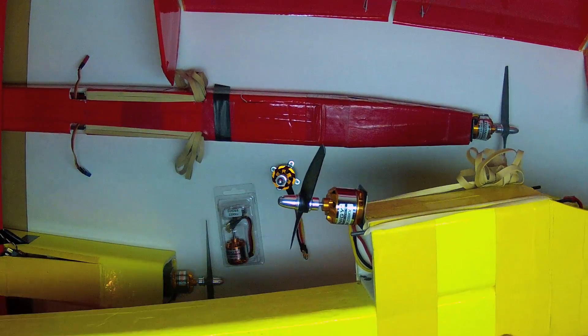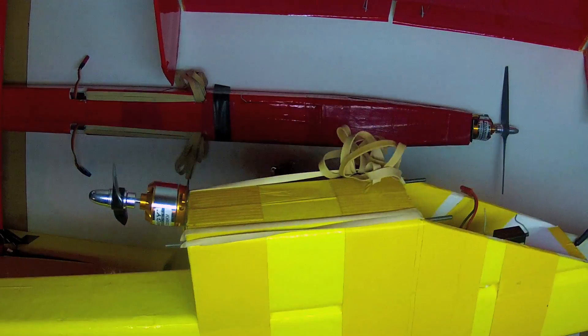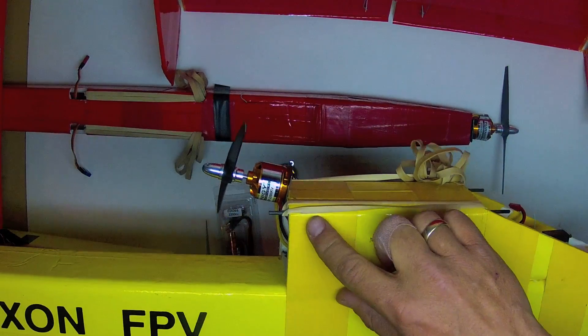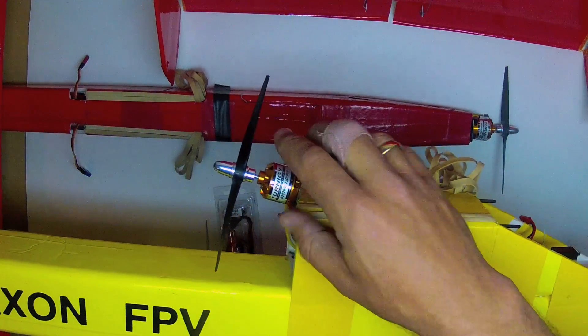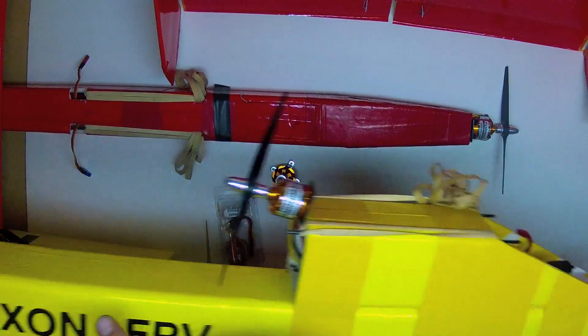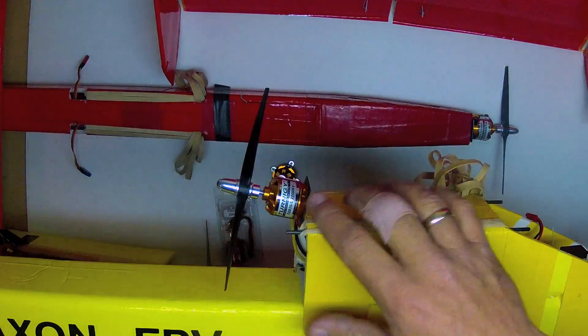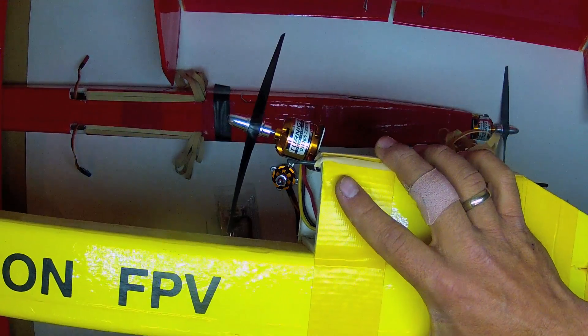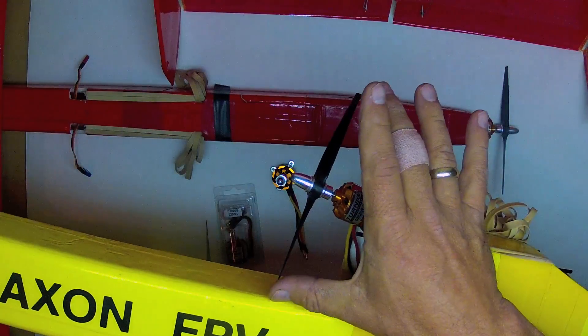Therefore, it makes it definitely the motor of choice for the Axon, which you see here. This is a mid-mounted pusher, which means the motor is mounted neither at the tail nor at the nose, but in the middle. And it's a pusher.